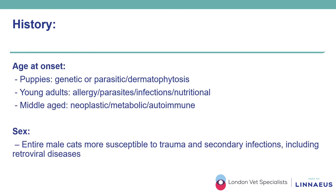Age at onset plays also an important role. In puppies, the majority of conditions will have a basis that is either genetic or parasitic/infectious. In young adults, the most common conditions affecting the face will be allergies, parasites, infectious or nutritional. Neoplastic, metabolic or autoimmune conditions are mostly seen in middle-aged to elderly patients. Sex is also important — for example, entire male cats are more susceptible to trauma and secondary infections, including retroviral diseases.